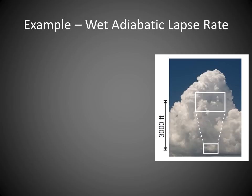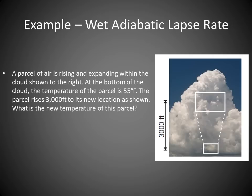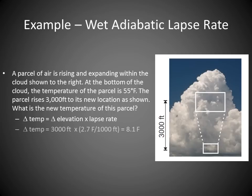Now let's look at an example using the wet adiabatic lapse rate, guided by a diagram of a cumulonimbus cloud. A parcel of air is rising within the cloud; at the bottom the temperature is 55°F. The parcel rises 3,000 feet to a new location — and notice the box is larger, so it must be cooling. Using ΔT = Δelevation × lapse rate: 3,000 × 2.7°F/1,000 = 8.1°F. The new temperature is 46.9°F.